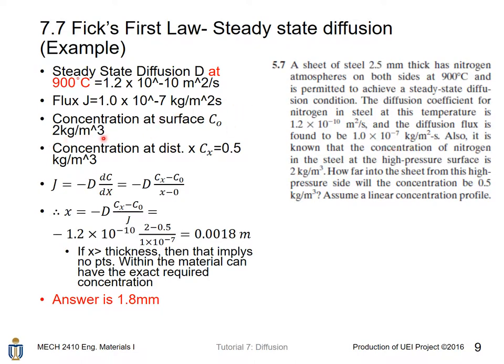The concentration at surface, C₀, is 2 kg per meter cube. The high pressure surface is 2 kg per m³. And the concentration at distance x, Cx, is 0.5 kg per meter cube.